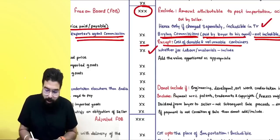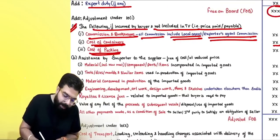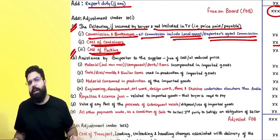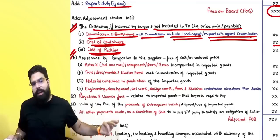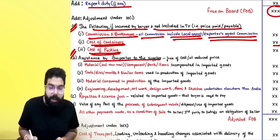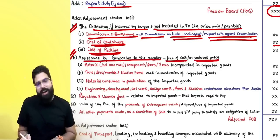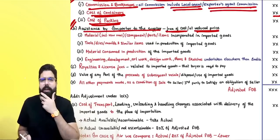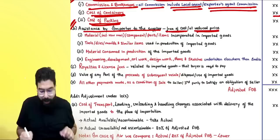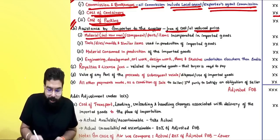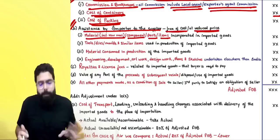Add cost of containers, except durable and returnable containers whose cost should not be added. Always add the cost of packing, whether for labor or material. Under Rule 10(1)(b), any assistance given by the importer to the supplier free of cost or at reduced cost must be included — such as raw materials, component parts, or items incorporated in the imported goods. The amount must be apportioned between the goods to be imported.